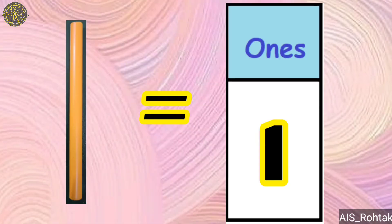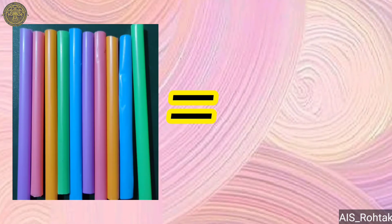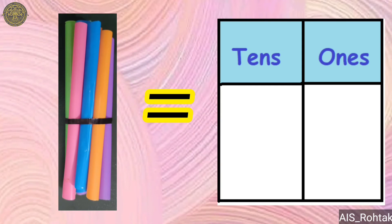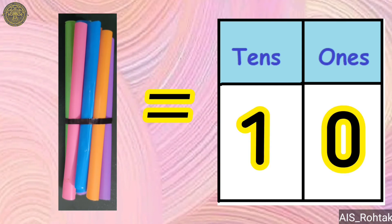As you all know, one loose stick means one ones, and ten such loose sticks when put together as a bundle make one tens and zero ones. That makes the number ten.